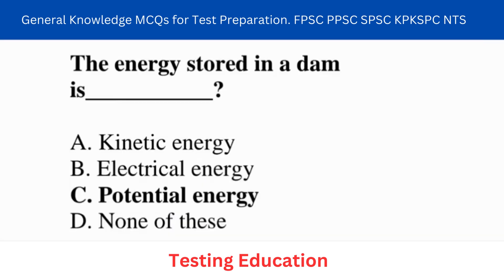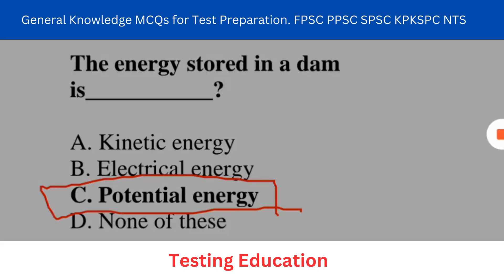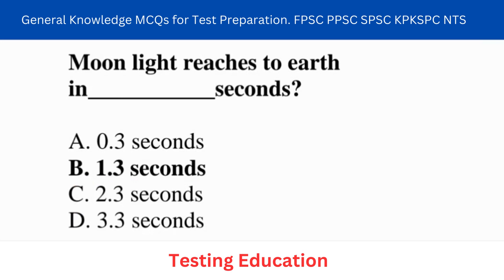The energy stored in a dam is potential energy. Next question: moonlight reaches Earth in how long? Answer: 1.3 seconds.